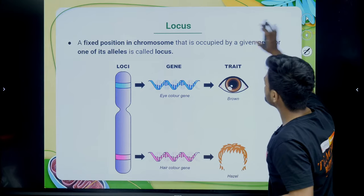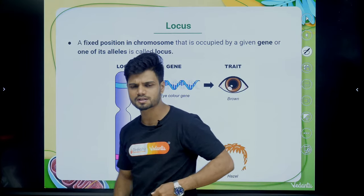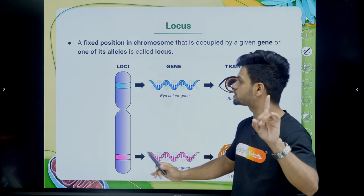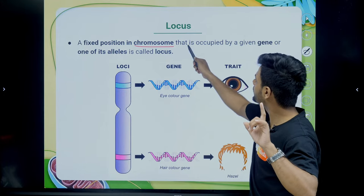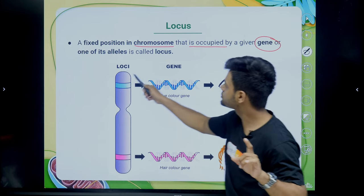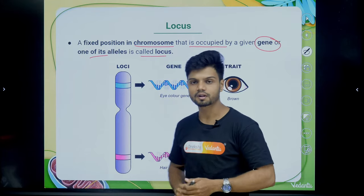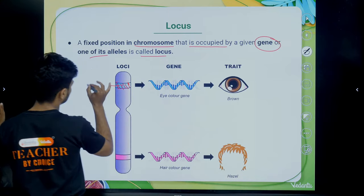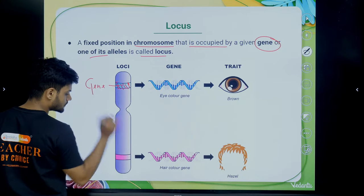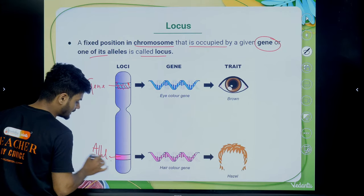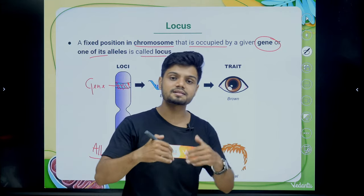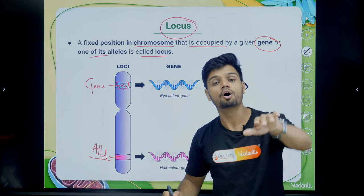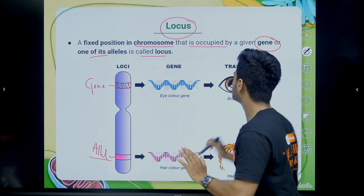What is a locus? If this is a chromosome, a fixed position on that chromosome occupied by a certain gene or allele is called a locus. On a particular locus, one particular gene will be present and will express itself. Locus is a fixed position of a gene on the chromosome.